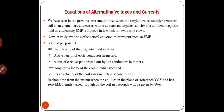Equations of alternating voltages and current. We have seen in the previous presentation that when the single-turn rectangular armature coil of an elementary alternator rotates at constant angular velocity in a uniform magnetic field, an alternating EMF is induced in it which follows a sine curve.